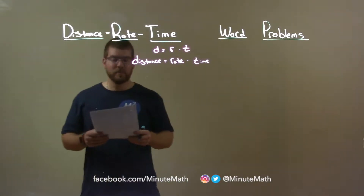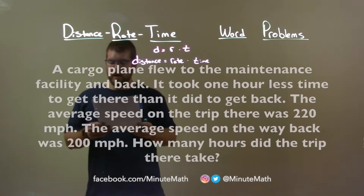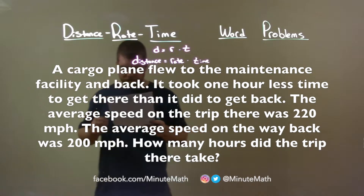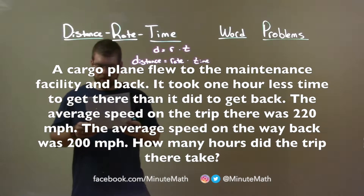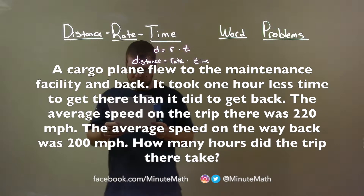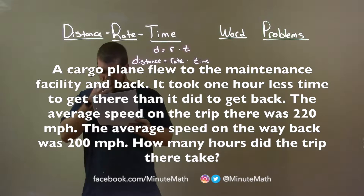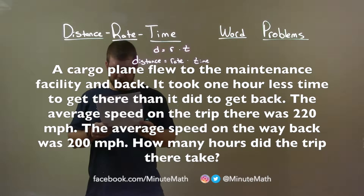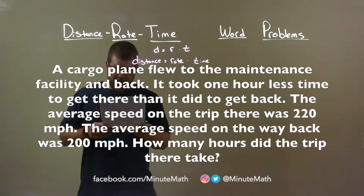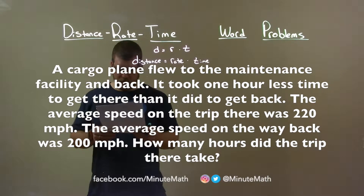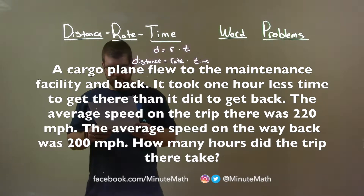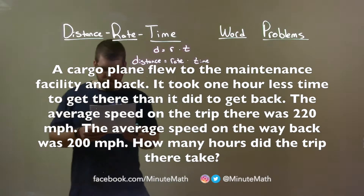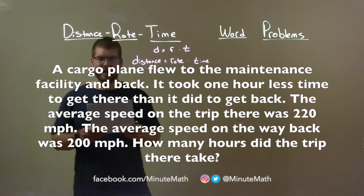If I was given this problem: a cargo plane flew to the maintenance facility and back. It took one hour less time to get there than it did to get back. The average speed of the trip there was 220 miles per hour; the average speed on the way back was 200 miles per hour. How many hours did the trip there take?